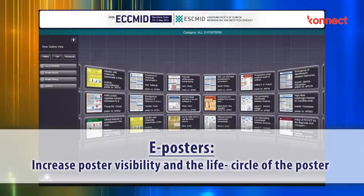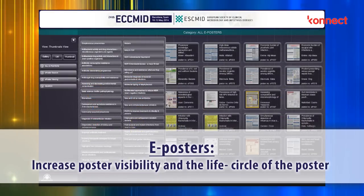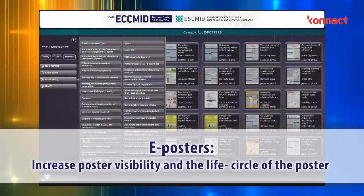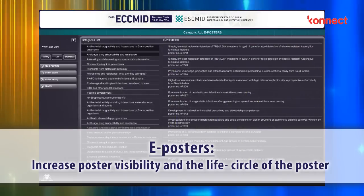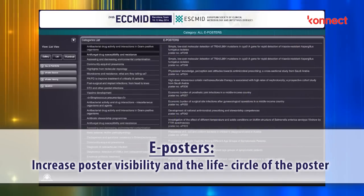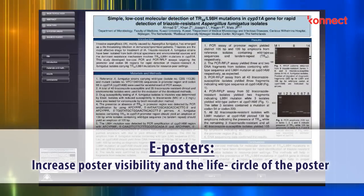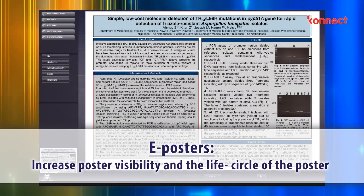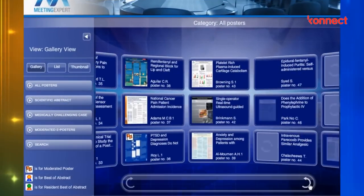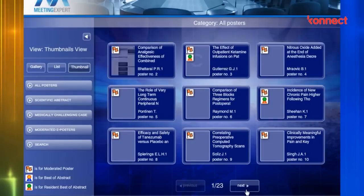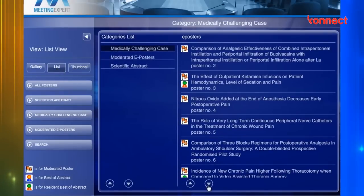E-posters are a great way of increasing poster visibility during the event. There will be five e-poster sessions running in parallel over two days and 25 e-poster viewing stations throughout the venue. Delegates can search easily for the posters they want by author name, poster title or keywords. High resolution touch screens provide excellent quality viewing experiences and allow seamless switching from full view to section view.